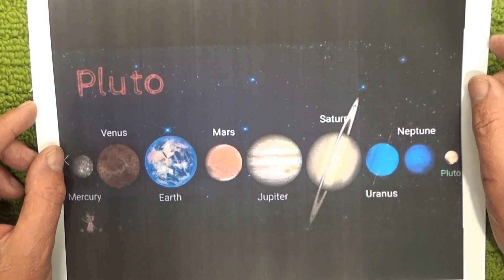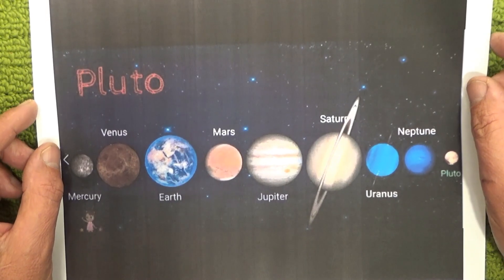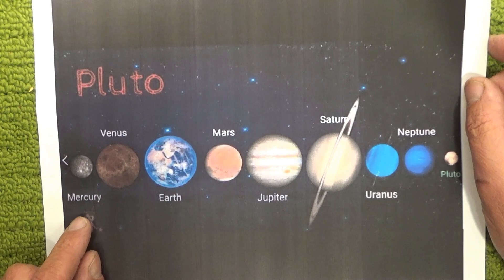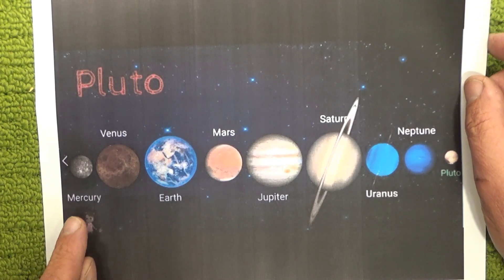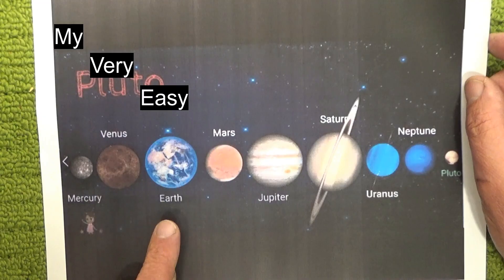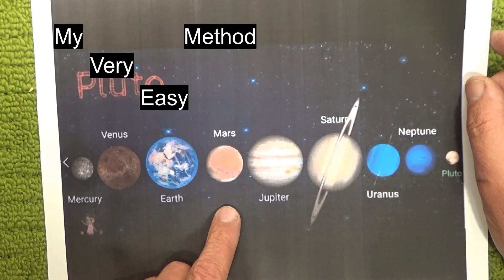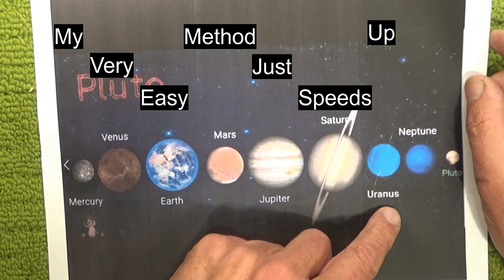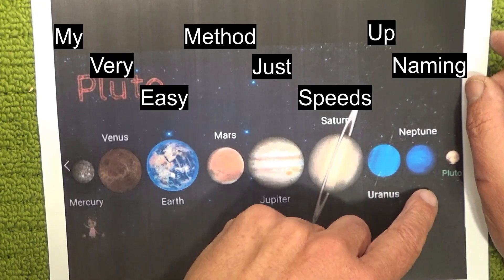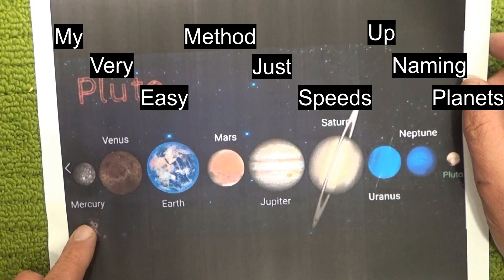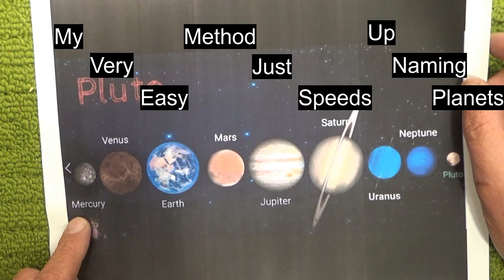The way to remember them is by remembering this simple mnemonic phrase, which is: "My Very Easy Method Just Speeds Up Naming Planets." If you remember that, then each first letter corresponds to a planet.